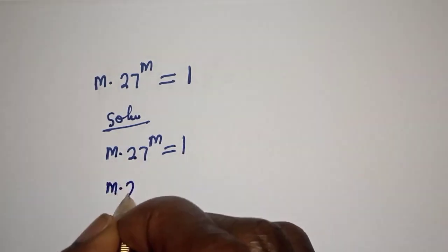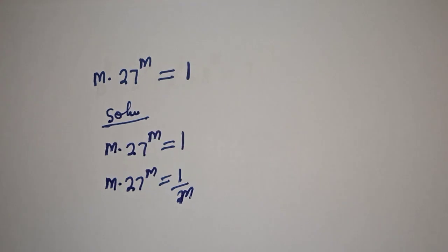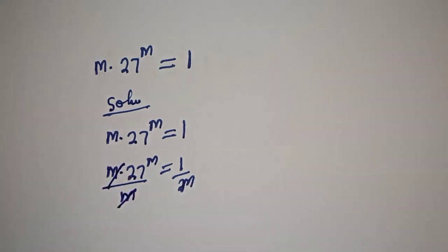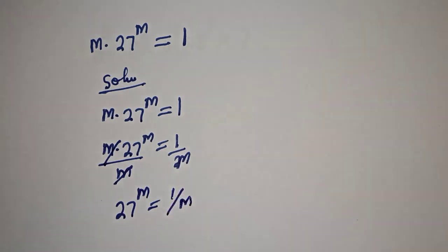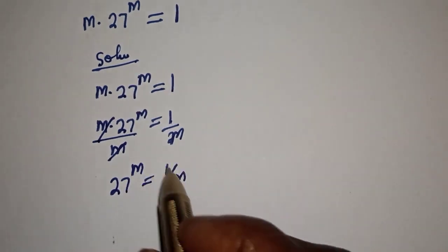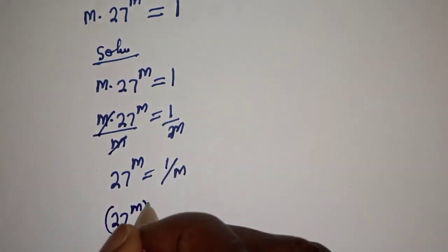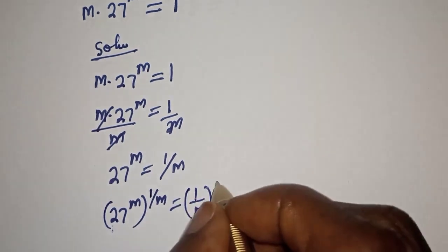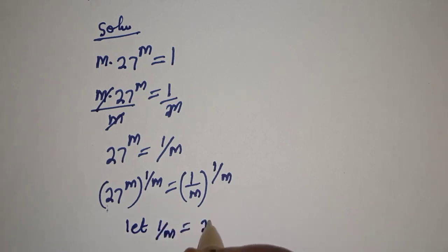m multiplied by 27 raised to power m is equal to 1 over m. The m's cancel, so 27 raised to power m is equal to 1 over m. Then let's multiply the exponent of both sides by 1 over m: 27 raised to power m, to the power of 1 over m, is equal to 1 over m to the power of 1 over m. Let 1 over m equal s.